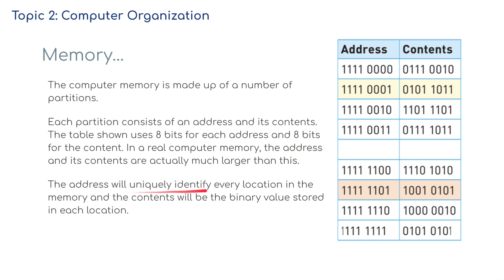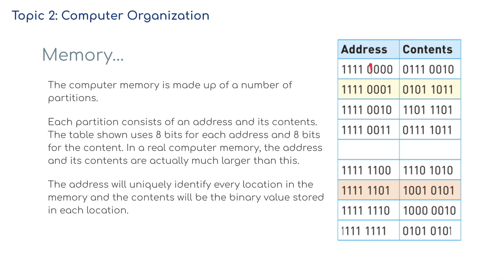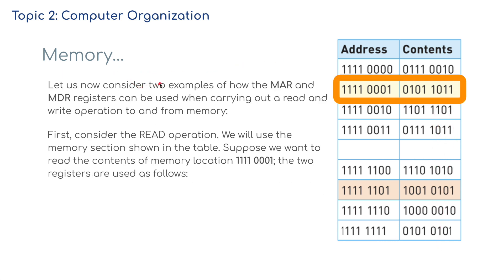The address uniquely identifies every location in the memory, and the contents will be the binary values stored in each location. So we've got the address — where the data lives — and of course we've got the data. Let's now consider two examples of how the MAR and the MDR registers can be used when carrying out a read and write operation to and from memory.